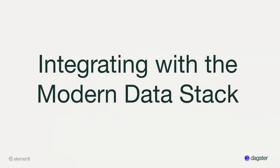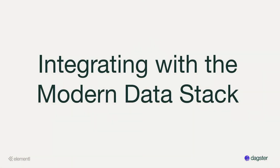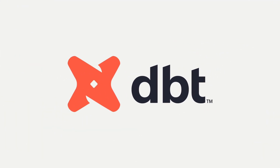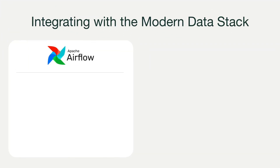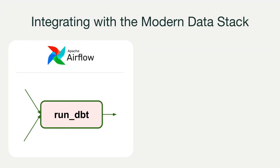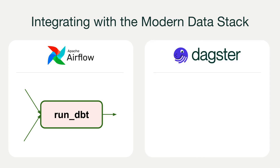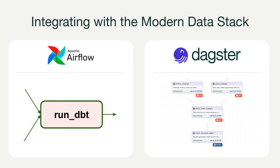Another benefit of Dagster's asset focus is that it enables much deeper integrations with modern data stack tools. For example, consider dbt, which is a tool that helps analytics engineers write SQL to build tables. Airflow focuses on tasks, so it represents the entire dbt model graph as a single node in its DAG. In Dagster, dbt models are easy to represent as Dagster assets. This means Dagster can represent the full dbt graph, making it easy to understand the relationships between individual dbt models and other data assets, as well as run individual dbt models and track which models completed successfully.